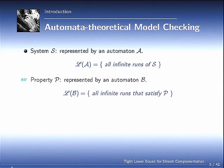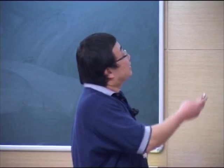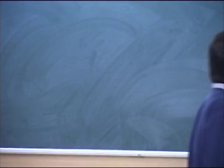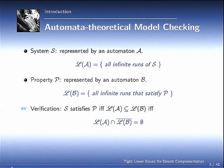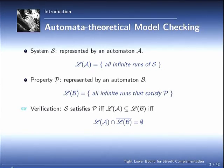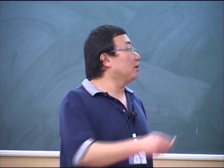So first, the introduction. We have heard a lot about model checking since the beginning of this conference. Here to talk about automata-theoretical model checking. Basically the system is represented as an automata and the property is also represented by another automata. The verification reduces to a language containment problem. So the intersection is fairly trivial. The complementation is somehow crucial in the whole efficiency of the algorithm. For this reason, the complementation is a fundamental problem in automata theory.